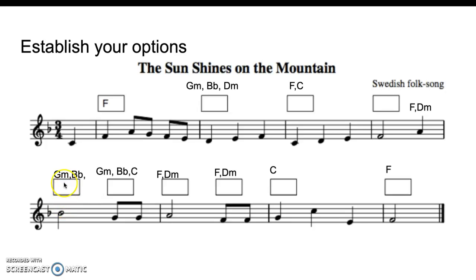Watch out here — only one note relates to this chord box. For the B-flat note, the options are G minor or B-flat. For the next box with a G, it could be G minor, B-flat, or C, as G is in all three chords. But alarm bells: if you use G minor here you can't use it there, and if you use B-flat here you can't use it there. For the note A alone, that could be chord one (F) or chord six (D minor) — those two are often interchangeable as D minor is the relative minor of F.